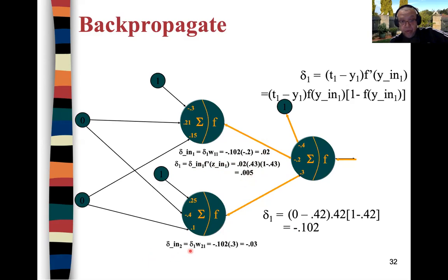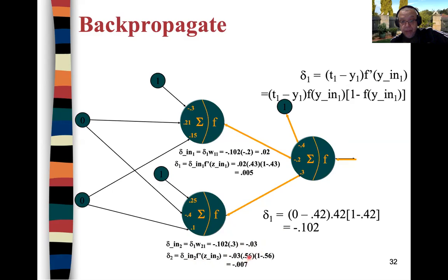For the second hidden node, delta_in_2 = −0.12 × 0.3. Then for delta_2, using our earlier value of z2 = 0.56, we compute −0.03 × 0.56 × (1 − 0.56) using the derivative-of-sigmoid property, giving us the delta_2 value.